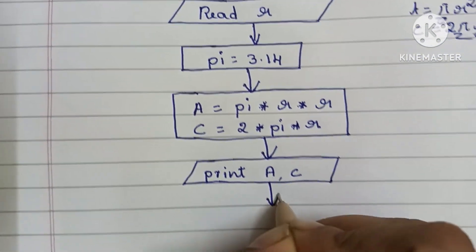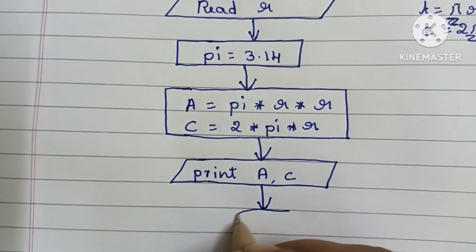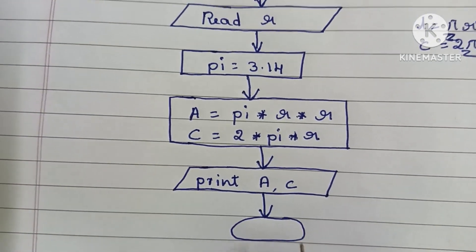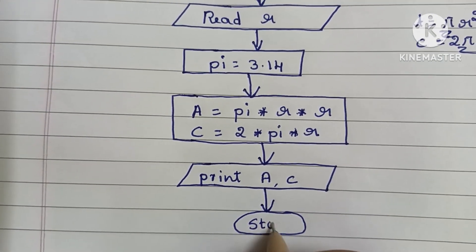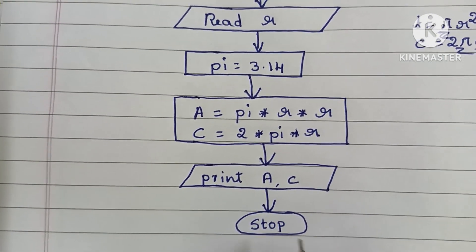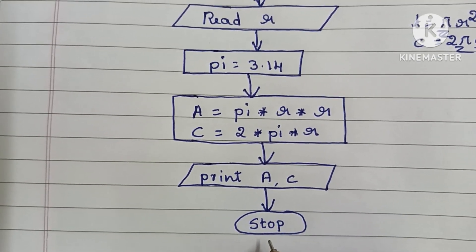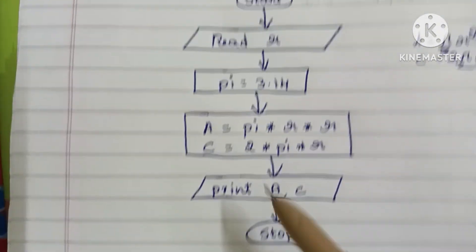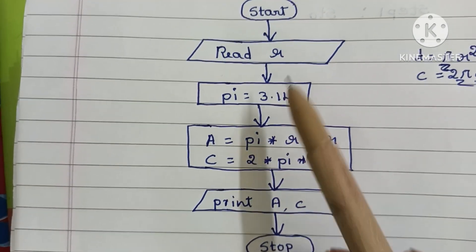Next, we stop the flowchart using the STOP statement. The STOP statement is always written within an oval shape. So both the START and STOP statements are written within oval shapes.